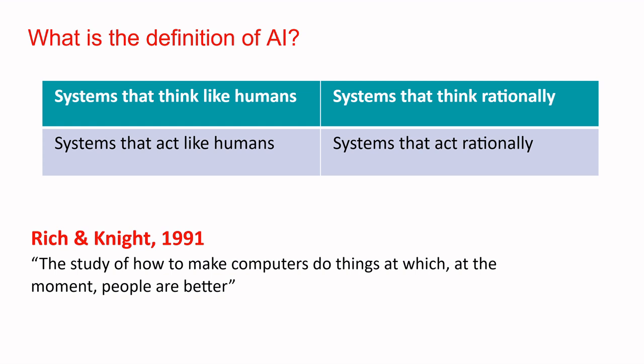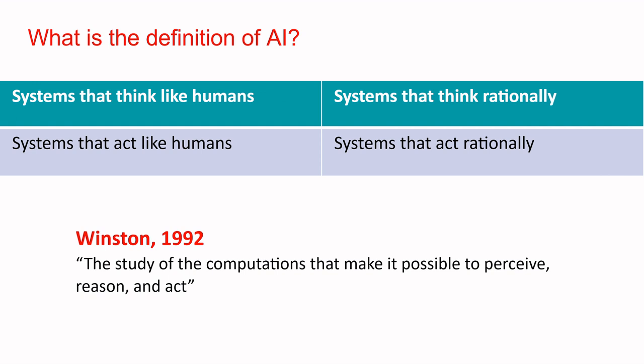The next definition, given by Rich and Knight, is the study of how to make computers do things at which, at the moment, people are better. The target of using artificial intelligence in machines is to do things faster, or in a better way than people. Another definition is the study of computation that makes it possible to perceive, reason, and act — we will see these three concepts in the next slides as well.